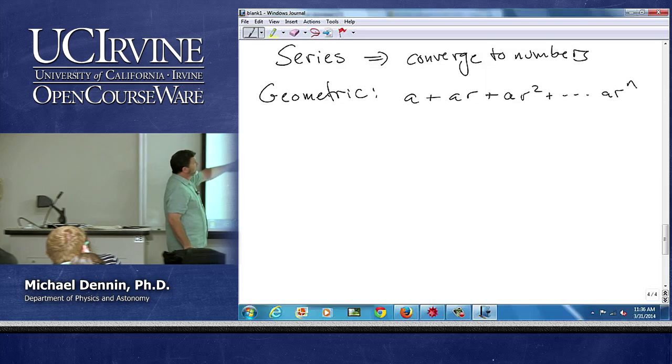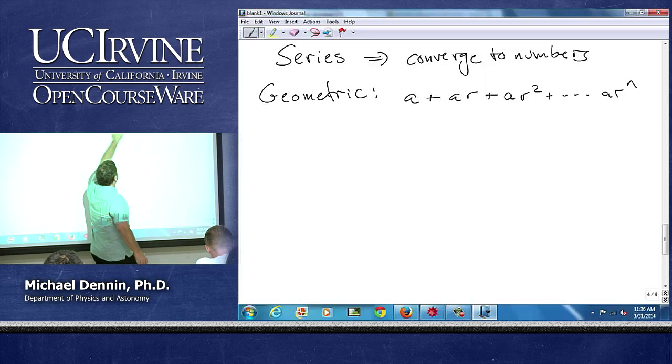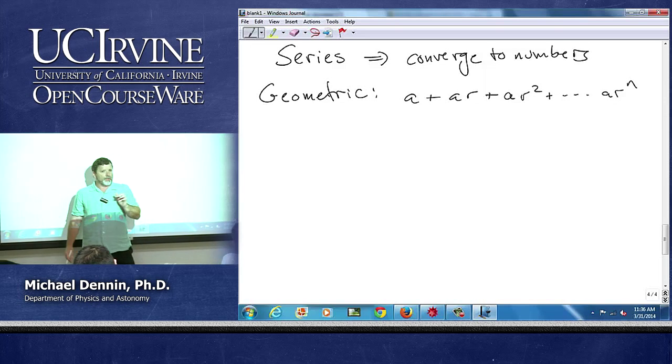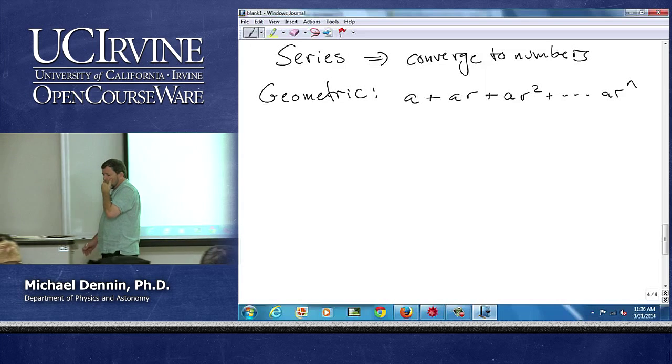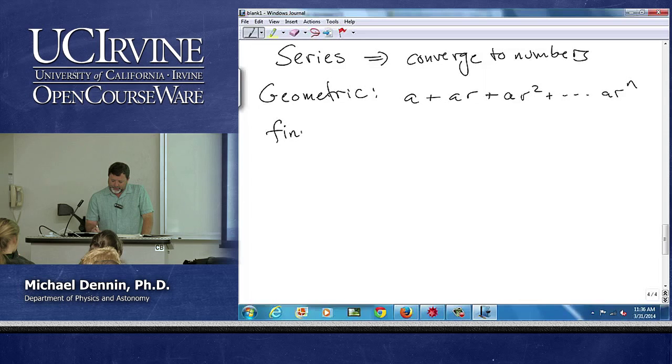It's a constant, in this case R, that's multiplying everything, and then it's increasing powers of R, and R is some number that you're going to plug in. We can define some various pieces to this.